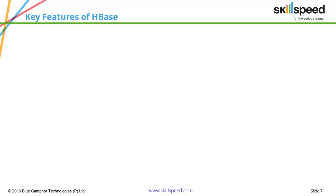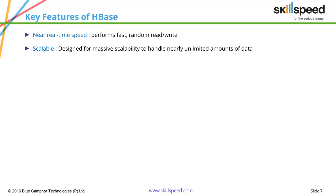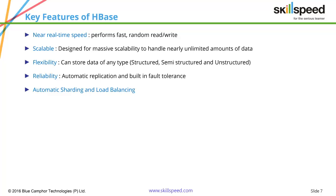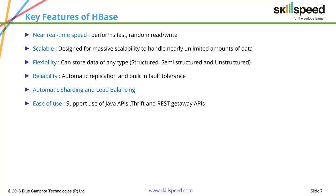Key features of HBase include near real-time speed — almost real-time, even if not one hundred percent. Scalability is very high since HBase is typically installed in a Hadoop cluster, giving it the same scalability as that cluster. It is flexible in the way you can store structured, semi-structured, and even unstructured data. Automatic replication and fault tolerance make it reliable, and there is load balancing and sharding. It is also easy to use via Java APIs, Thrift, and REST gateway APIs.